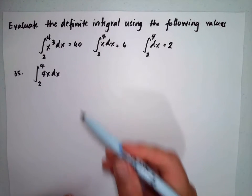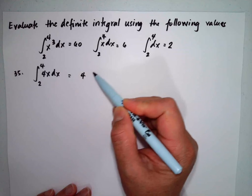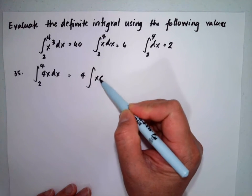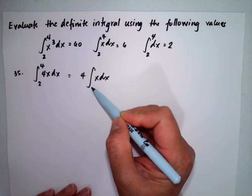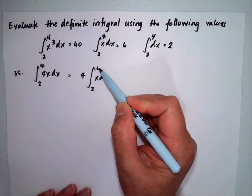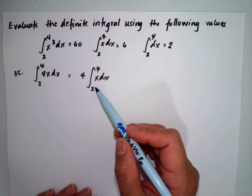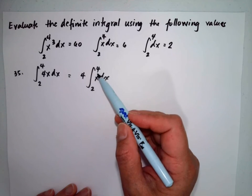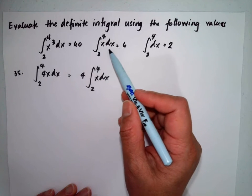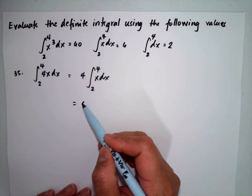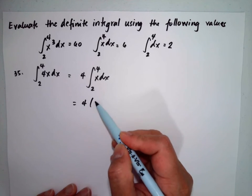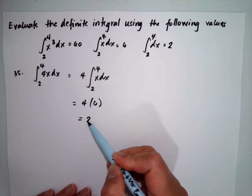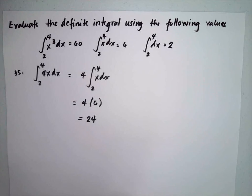This will be equal to 4 times the integral of x dx from 2 to 4. The integral of x dx from 2 to 4 is equal to 6, so we will just substitute 6. This will be equal to 24.